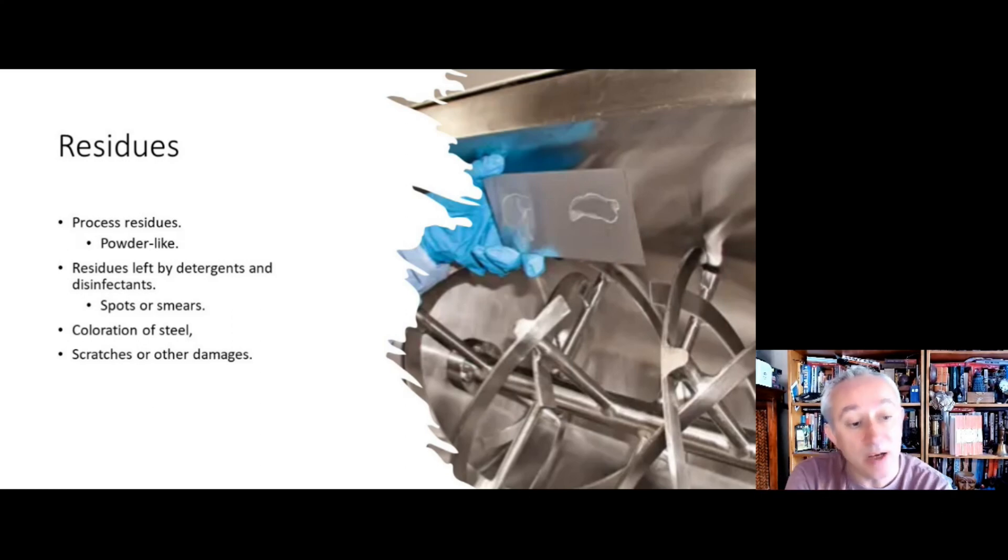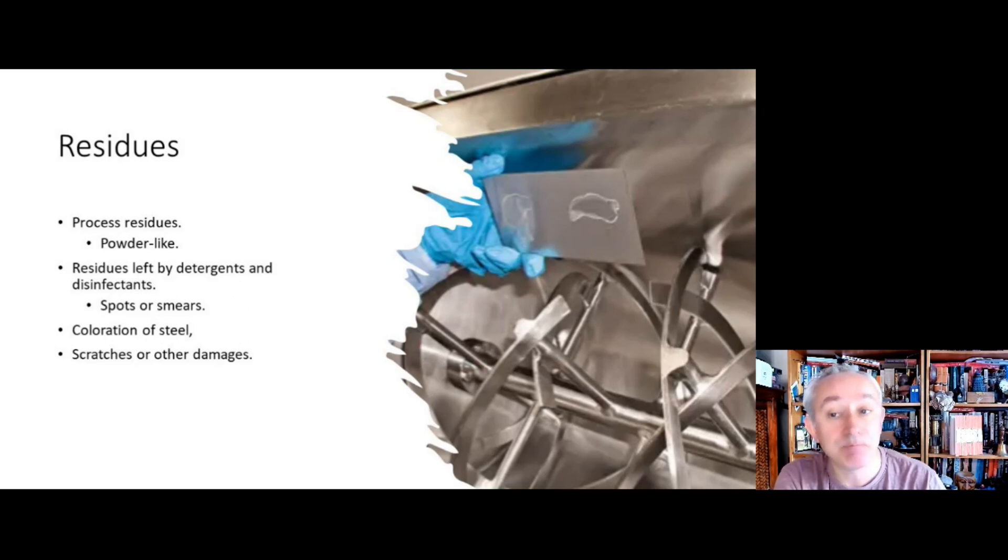So when we get these residues, either we need to clean more effectively or we need to use a water rinse. We can have problems spotting this because we can have coloration effects on steel, and also when we have scratches or other damage, it makes it harder to see that something really is as clean as it should be.